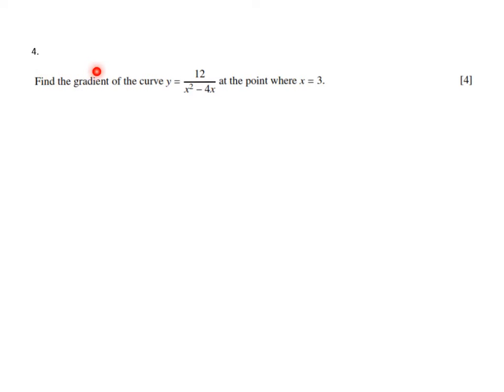What does it say? It says find the gradient of the curve y equals 12 over x squared minus 4x at the point where x is 3.